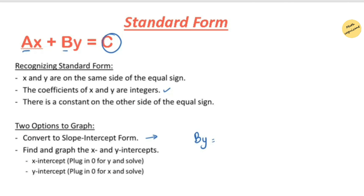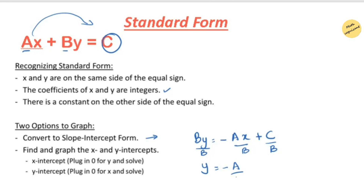To convert standard form into slope-intercept form, transfer ax to the other side of the equal sign so it becomes negative ax. Then divide both sides by the coefficient b, giving y equals negative (a/b)x plus c/b, where negative a over b acts as the slope and c over b is the y-intercept. This makes it easy to plot the graph.